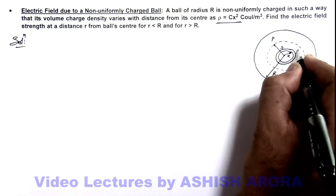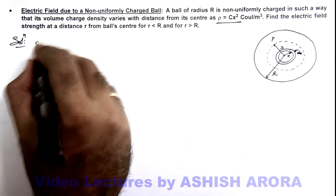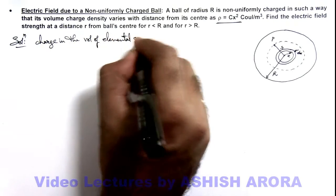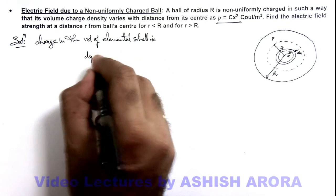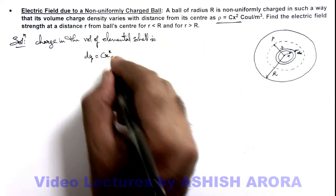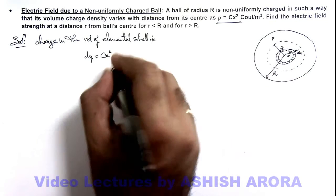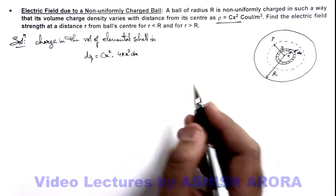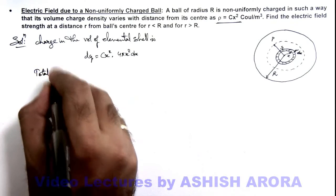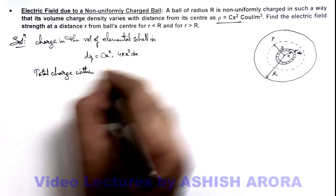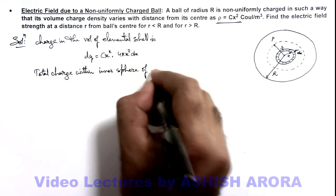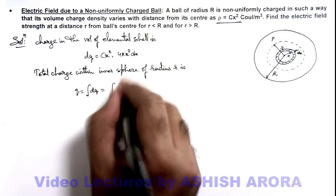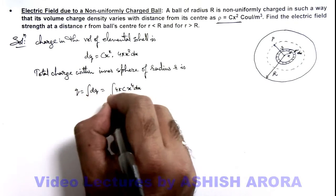We can calculate the charge in the volume of the elemental shell. dq equals the charge per unit volume, which is cx², multiplied by the volume occupied by this shell, which is 4πx²dx. So dq = 4πcx⁴ dx. We then find the total charge within the inner sphere of radius r by integrating dq, giving us the integral of 4πcx⁴ dx with limits from zero to r.